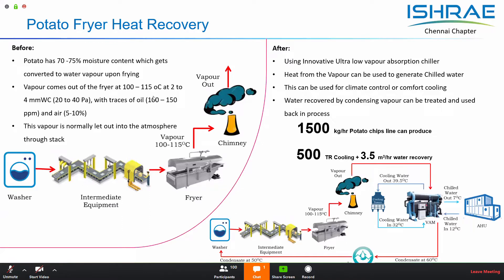Conventionally, these vapors are let out into the atmosphere, which causes two losses: first, you are releasing heat at a high temperature unrecovered; second, what is going out is nearly pure water vapor. By introducing an absorption chiller in between, the vapor from the fryer can be taken into an absorption unit where it will be condensed inside the generator, and that heat can be recovered to produce cooling. The snack industry also requires air conditioning to maintain temperature and humidity in the packaging unit to ensure the crispness of the chips is not lost.